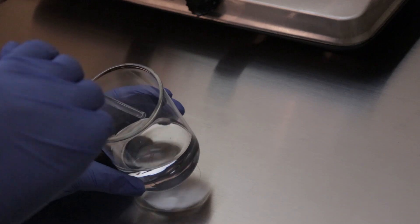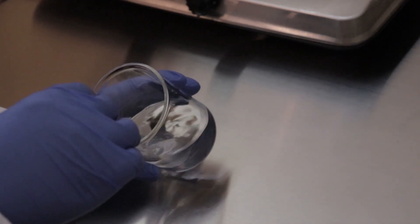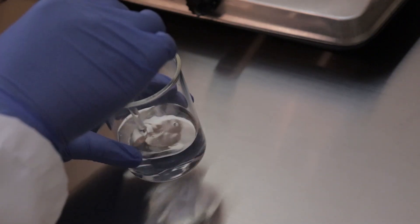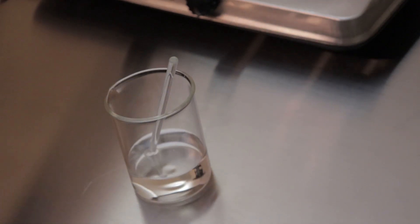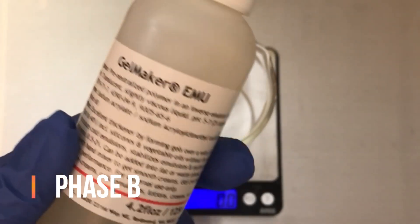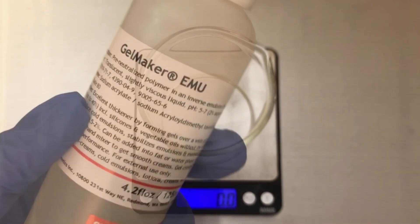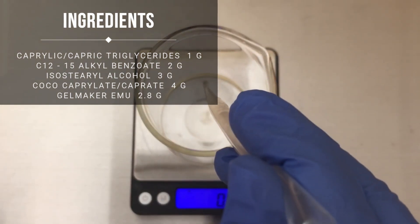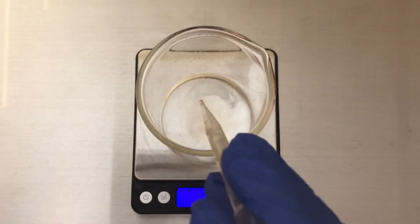So we're going to set phase A to the side and move on to phase B. We're going to start with the polymeric emulsifier which is going to turn this formula into a gel and also emulsify the water and oil phase. Then we're going to add in our lovely emollients and then stir them together.